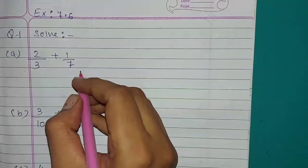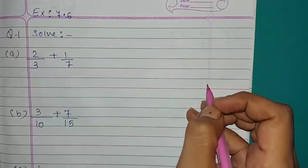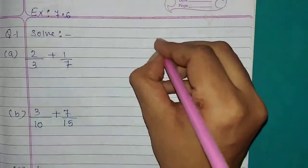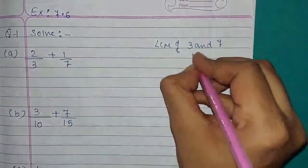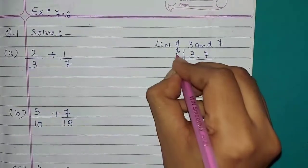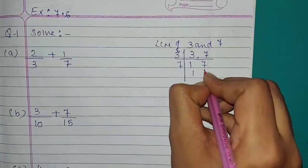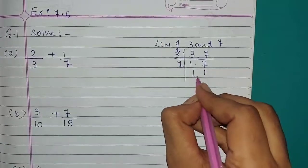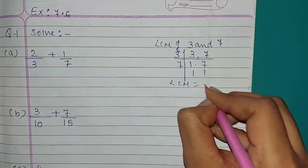Here we have to do addition of the two fractions. But both the fractions are unlike fractions. So to make the denominator same, we will take LCM of 3 and 7. LCM of 3 and 7 equals to 21.